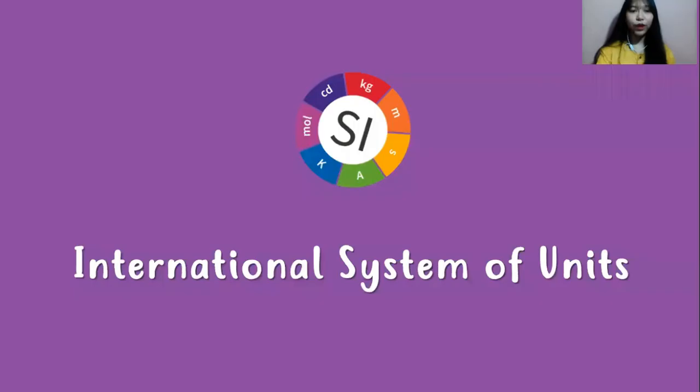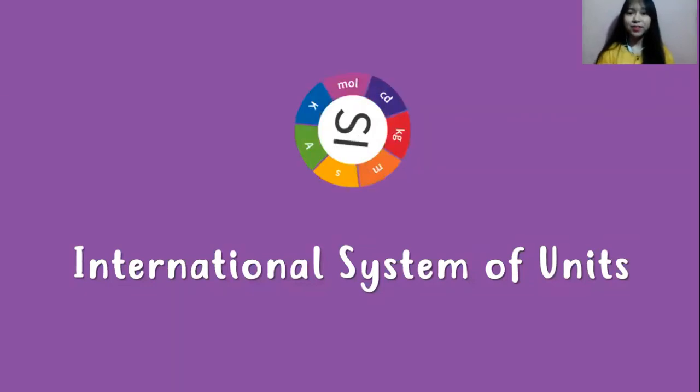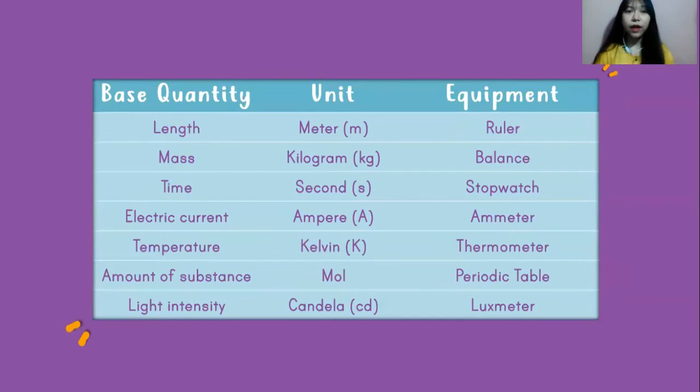Now we're going to learn about the base quantities mentioned before. There are seven base quantities applied all over the world. We call it the International System of Units, or the abbreviation is SI. I have a table of these quantities, their units, and also the equipment used to measure each quantity.